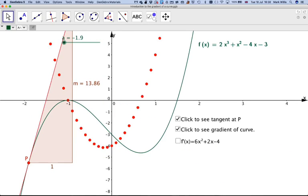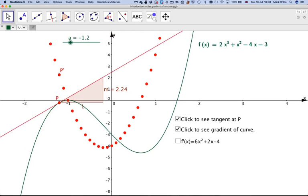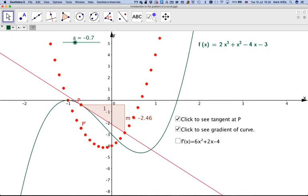And notice this as well. Here, where the gradient is positive, the tangent is above the curve. And it's still above the curve here. So here, the tangent is above the curve.